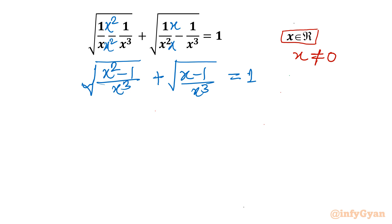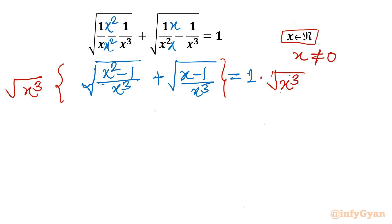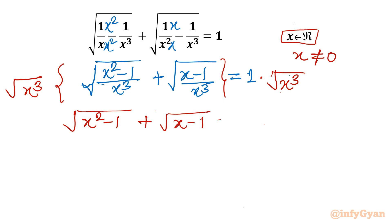Now I will multiply both sides by square root of x³, since x is non-zero. On the left hand side, multiplying through gives us: square root of (x² − 1) plus square root of (x − 1) equals square root of x³.